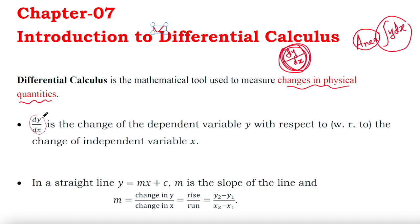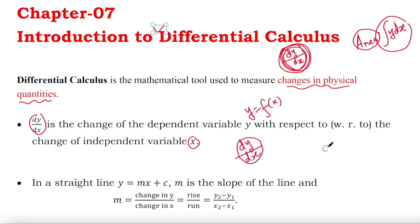So dy/dx is the change of the dependent variable y. Since y is a function of x, y is the dependent variable and x is the independent variable. So dy/dx is the change of y with respect to the change of x. For example, if h indicates your height and a indicates your age, then dh/da indicates the change of your height with respect to your age.